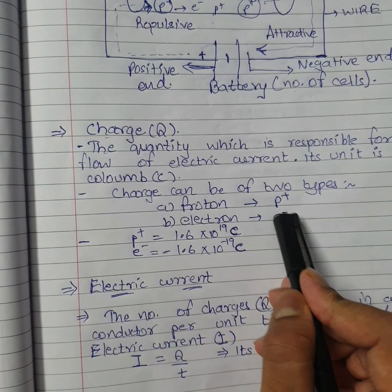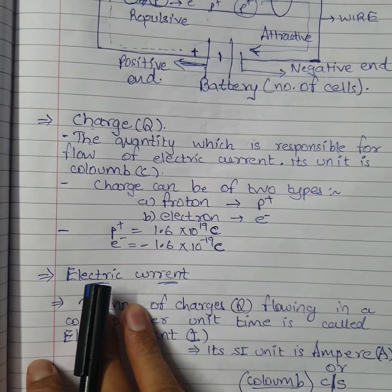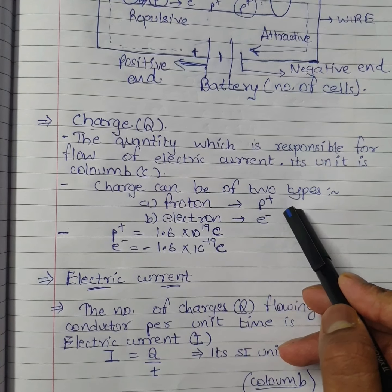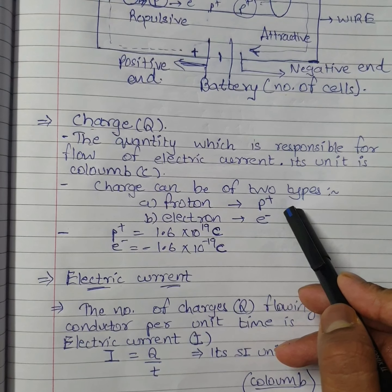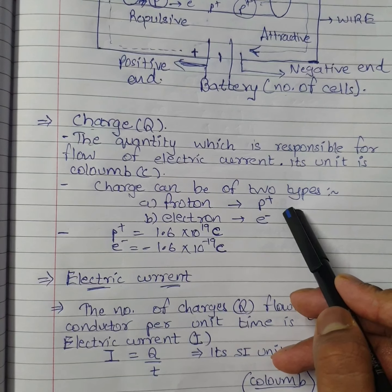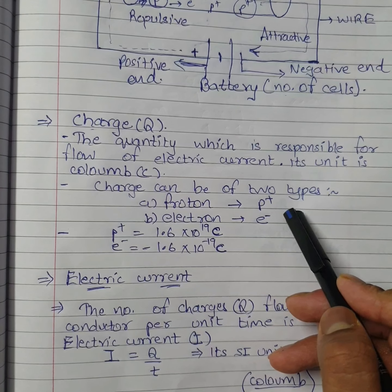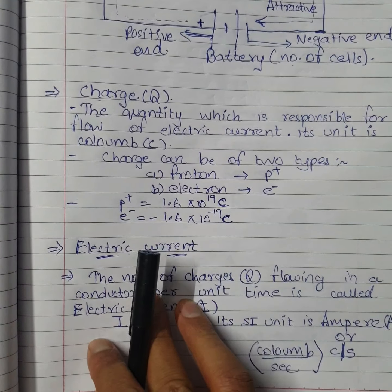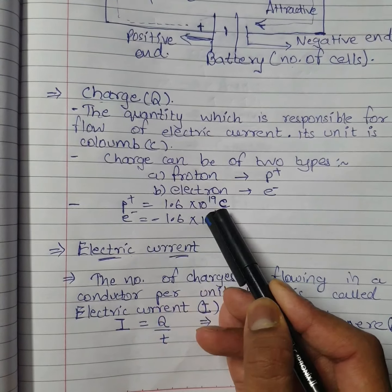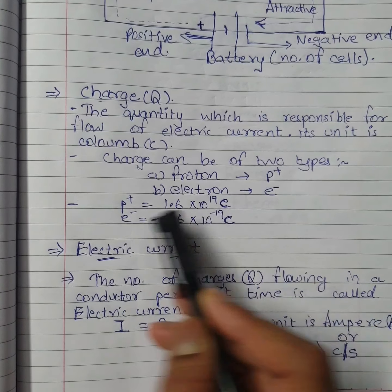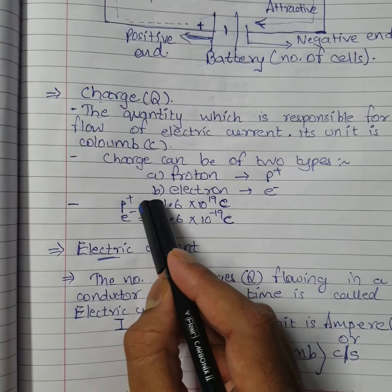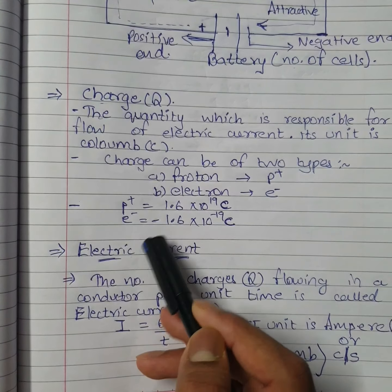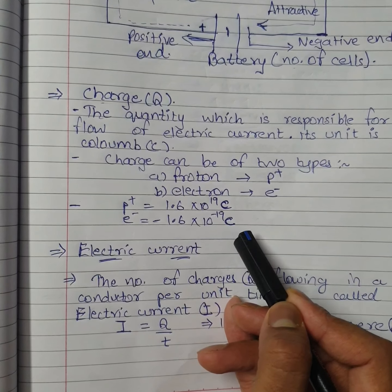Charge can be of two types: proton or electron. A circuit that conducts protons carries conventional current, while a circuit that conducts electrons carries electron current. The charge of a proton is +1.6 × 10⁻¹⁹ coulomb, and the charge of an electron is −1.6 × 10⁻¹⁹ coulomb.